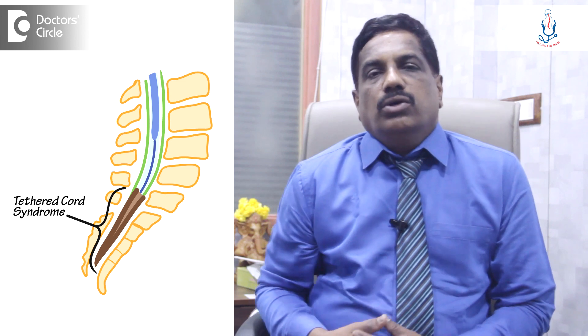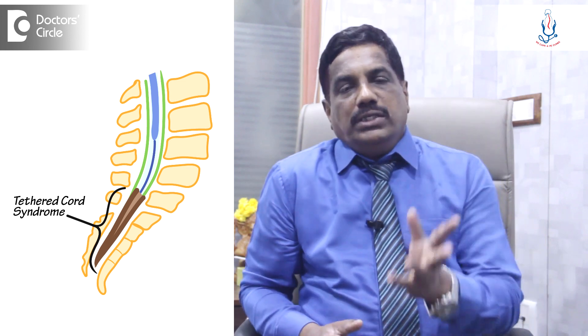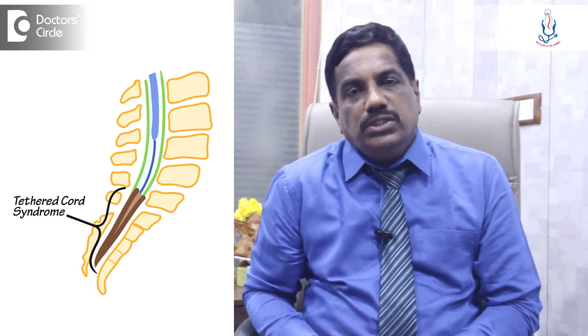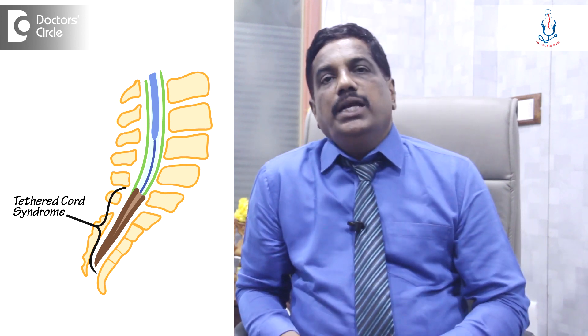This has to be diagnosed first with MRI. We have to diagnose that tethered cord syndrome. Once the diagnosis is done, the treatment is simple. We have to simply cut off that tethered cord — the fibrous band which is attaching the spinal cord to the bone, and release the tethered cord.